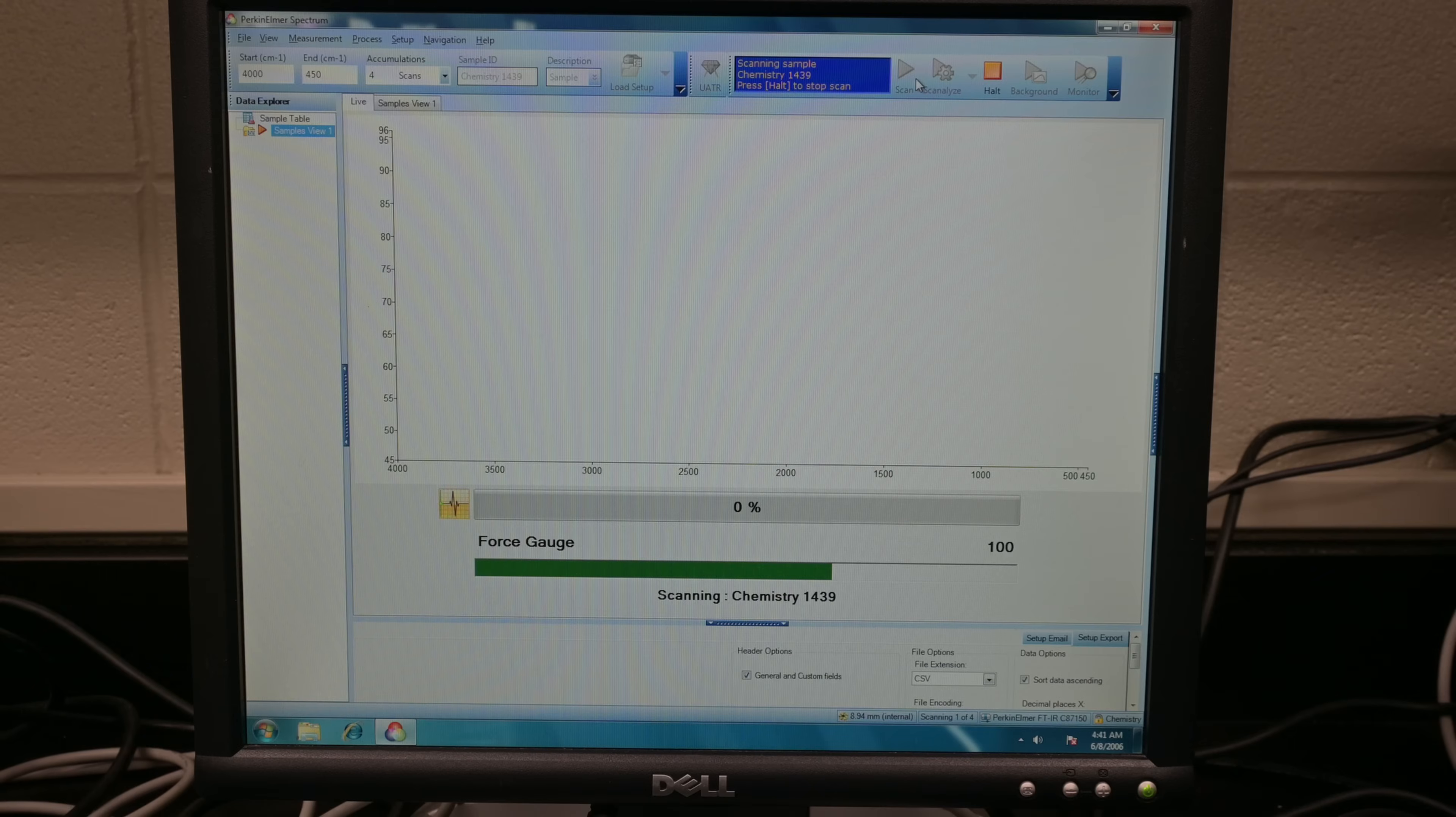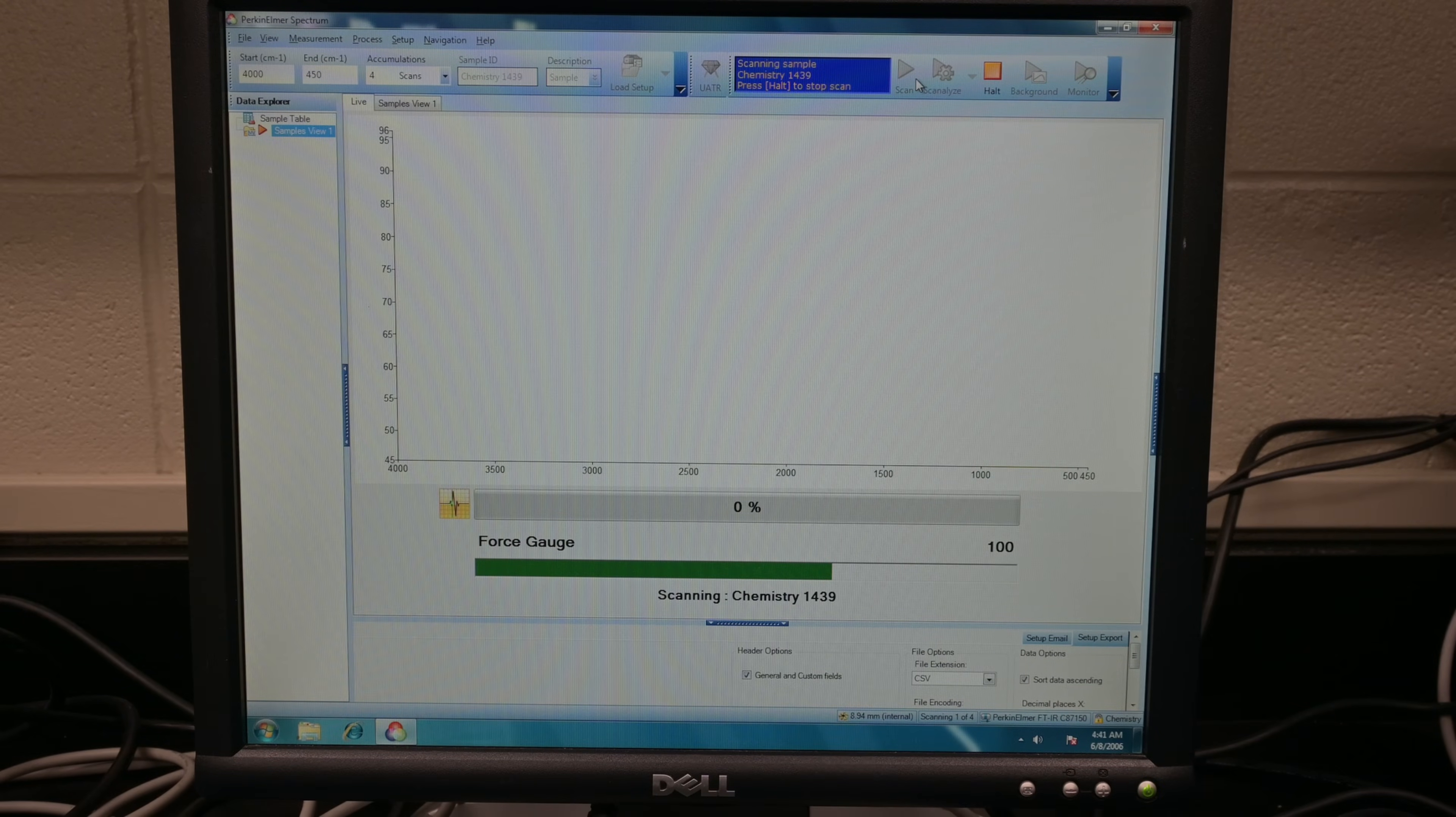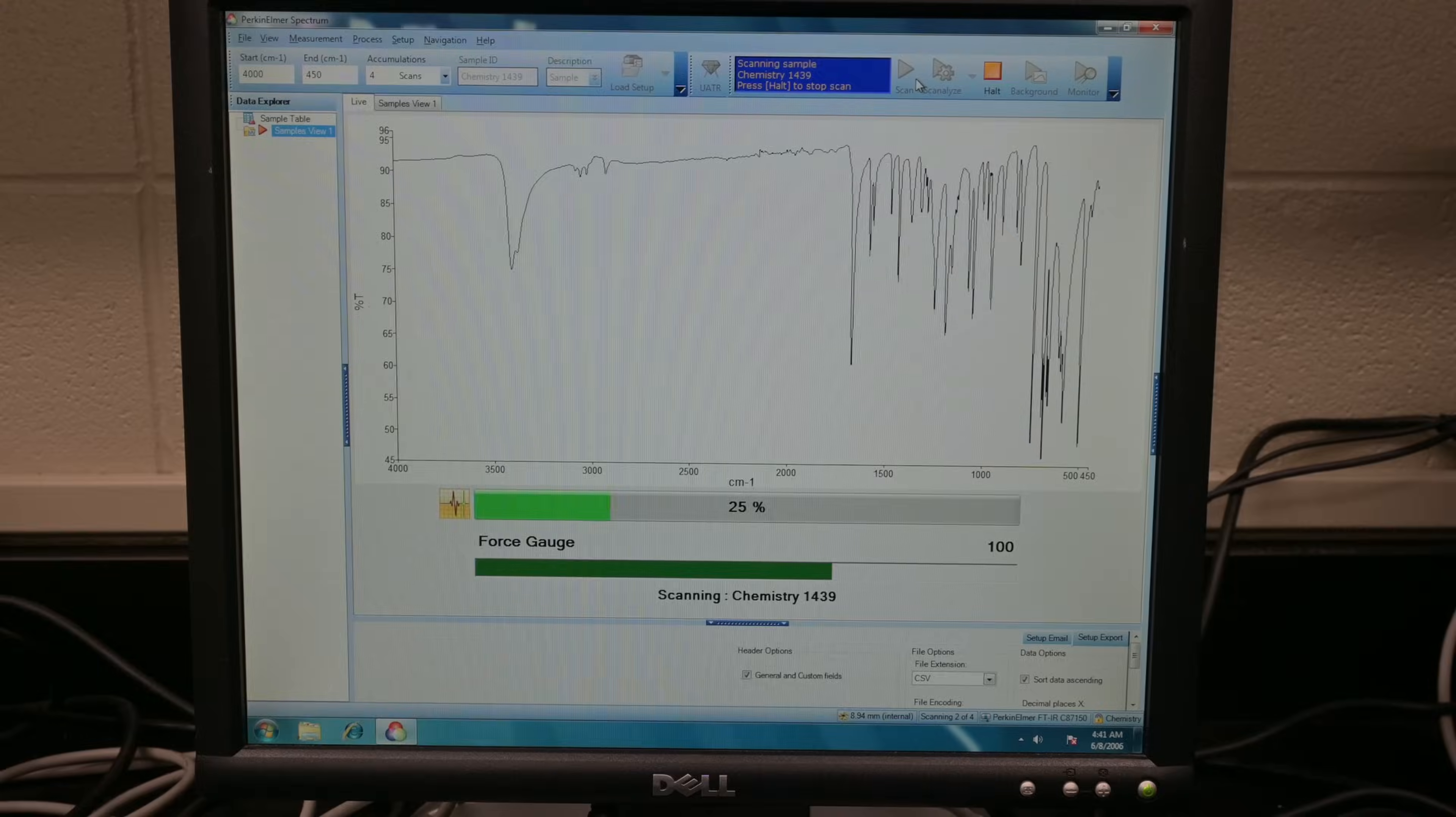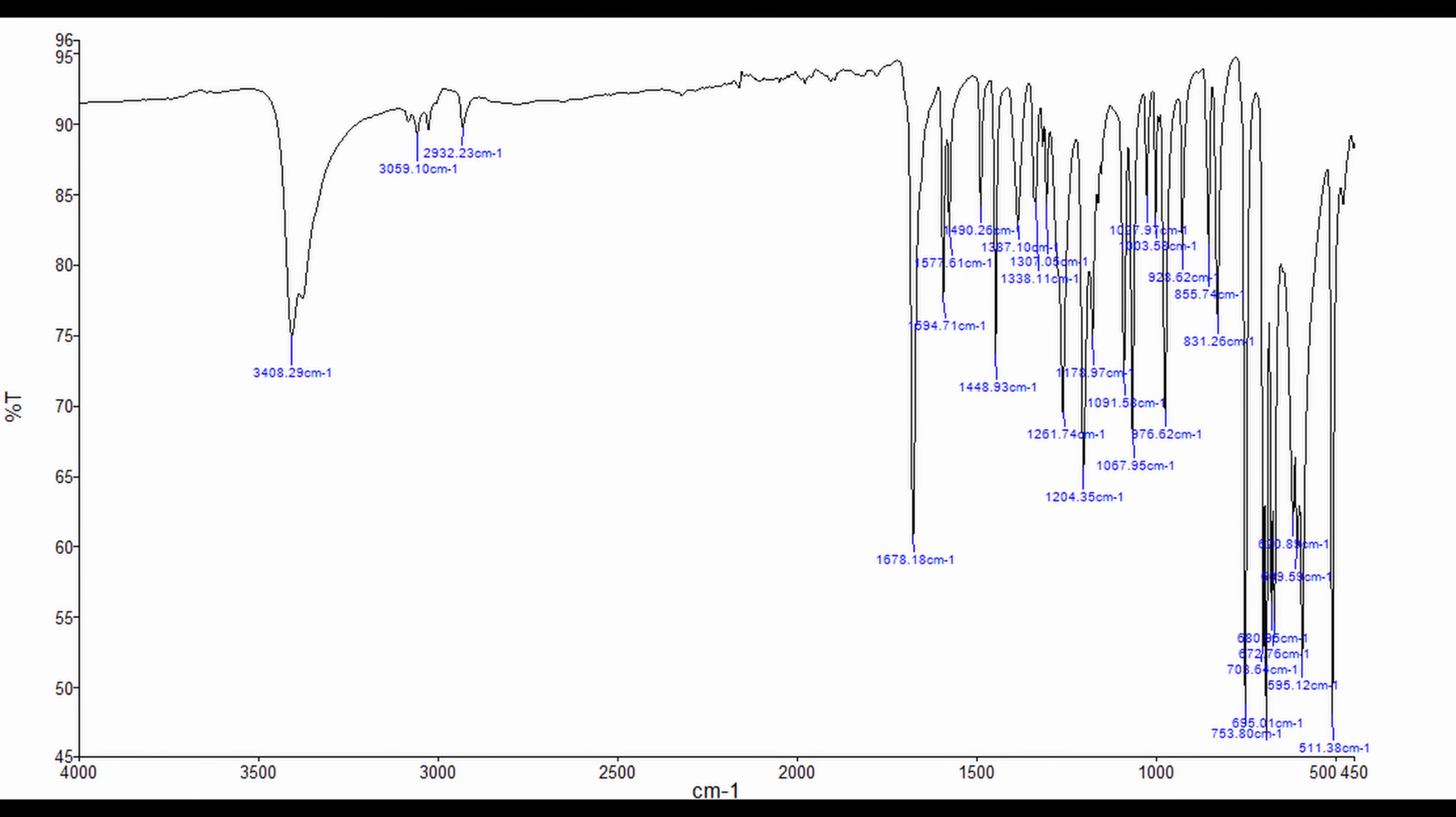Let's begin with benzoin. The FTIR spectrum provides critical evidence of benzoin condensation reaction success. Benzoin formed from benzaldehyde showcases characteristic peaks due to its unique structure. Specifically, the FTIR spectrum from benzoin primarily displays a broad hydroxyl group, O-H, which typically appears around 3400 to 3200.